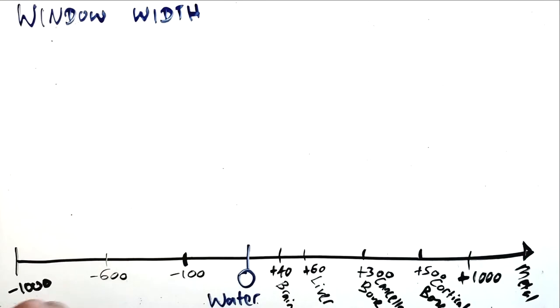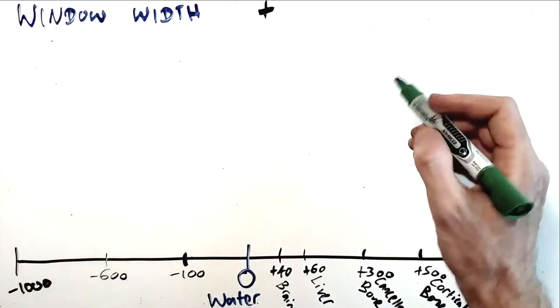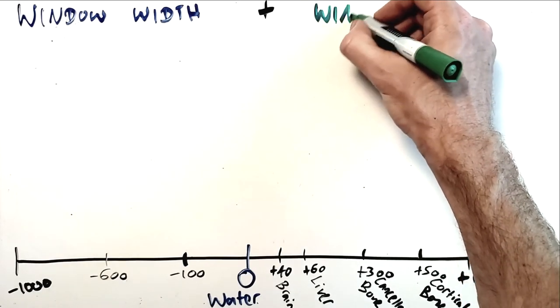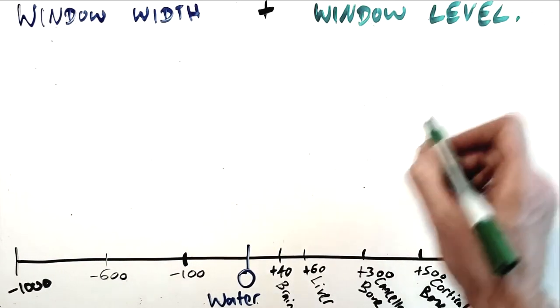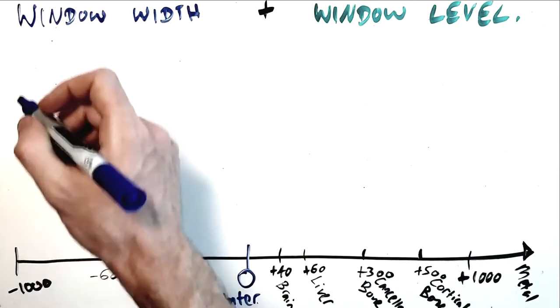So now that we have this nice neat scale in a range relative to the number zero, we can use those CT numbers to assign grayscale values from black to white and anywhere in between to show those tissues in a variety of shades of grey.